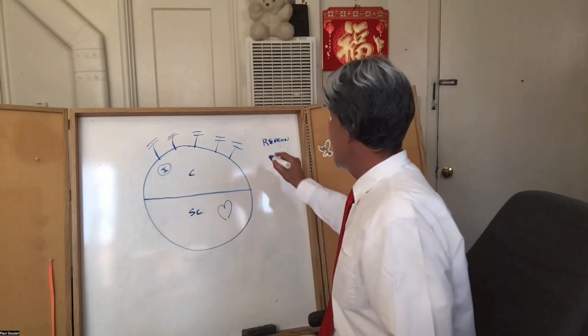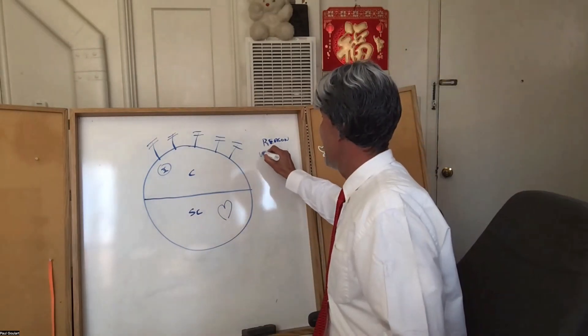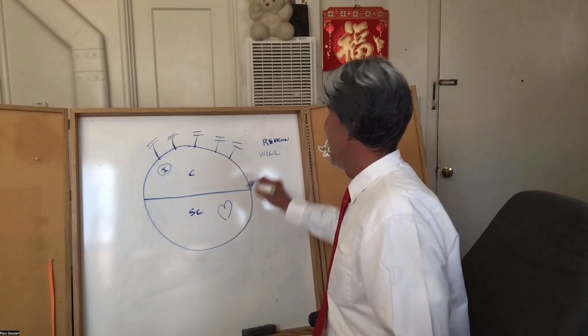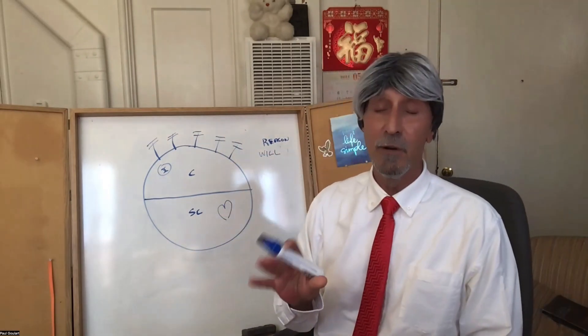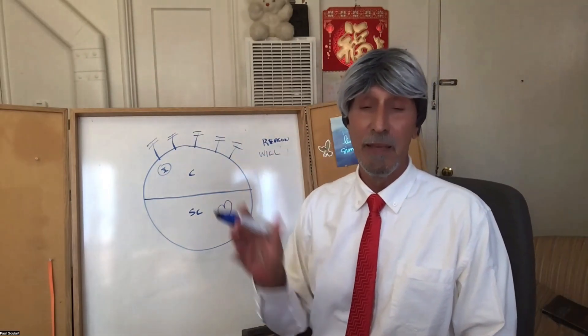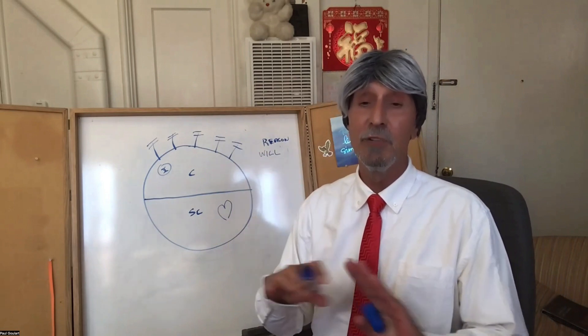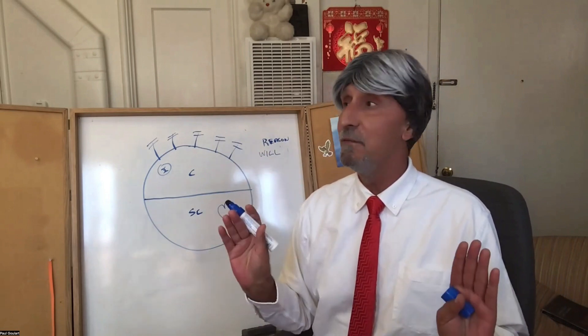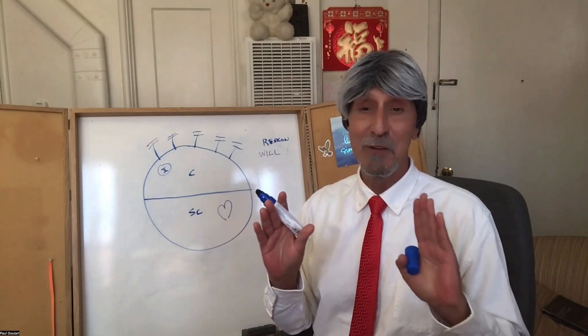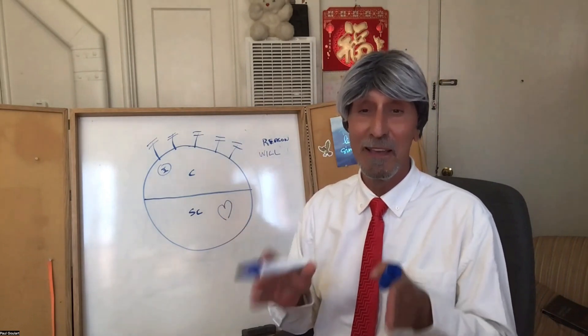The second mental faculty is called will, and will gives us the ability to focus on one image in our mind to the exclusion of all others. You've met those people that seem to have a one-track mind - they're always thinking about one thing. Well, they're using their will to do that.